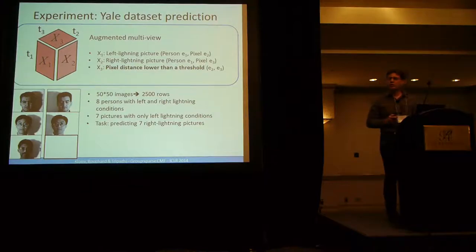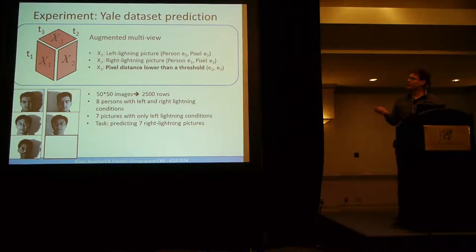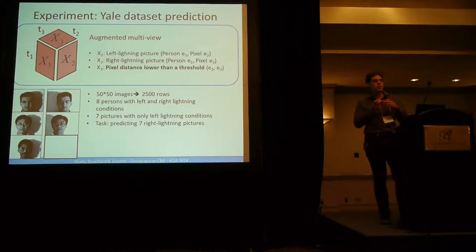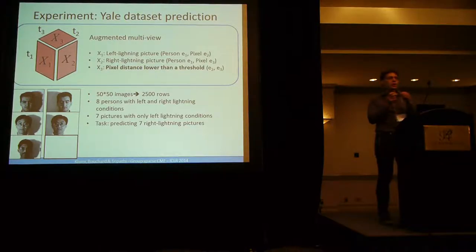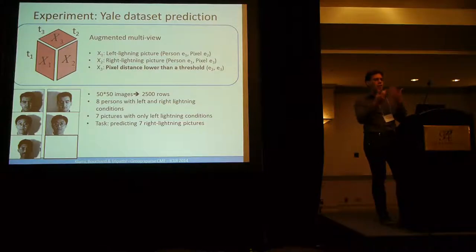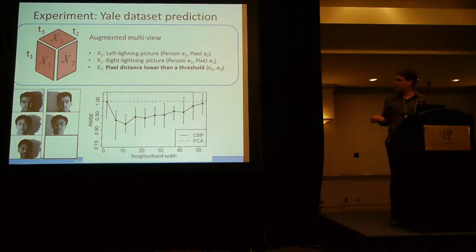Another nice example is in this simple dataset, it's called Yale dataset of faces. So you have pairs of images, faces which have two lighting conditions, left light and right light. We observe eight persons with these two views, and seven persons with only one view, and we try to guess the pixels of the missing view. With these experiments, we can define X3 as being the pixel proximity. Because since we have very few images, we only have eight persons, knowing that some pixels are close to each other will help in regularizing, because this information cannot be learned only with eight images.